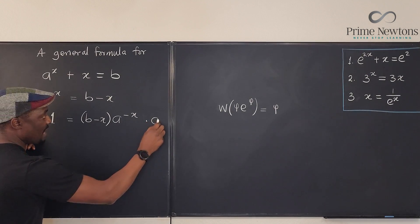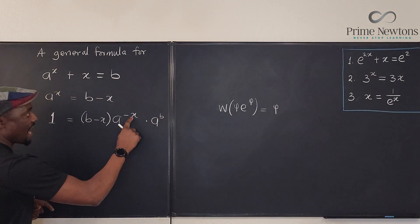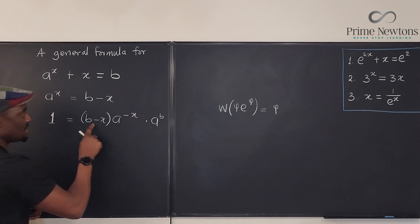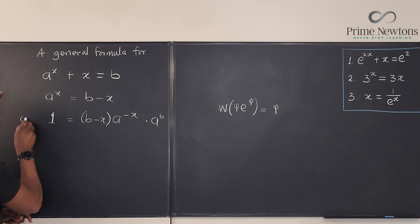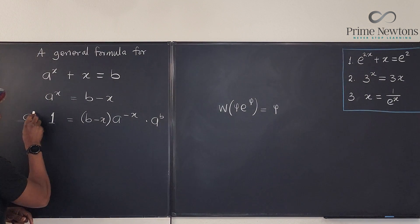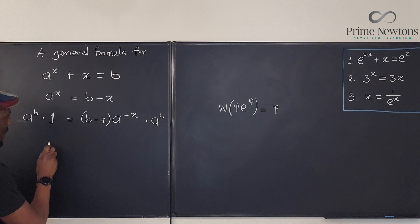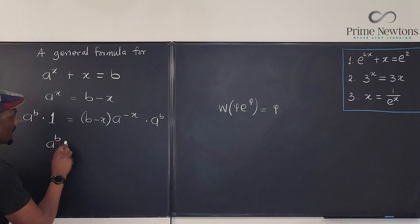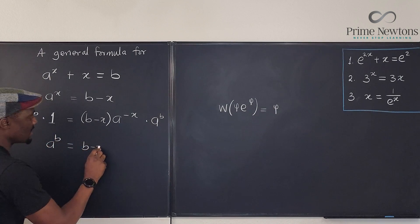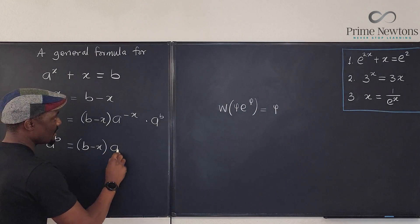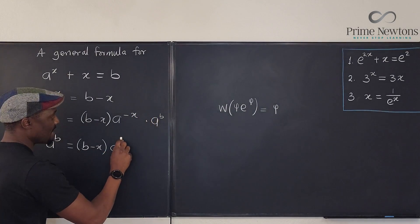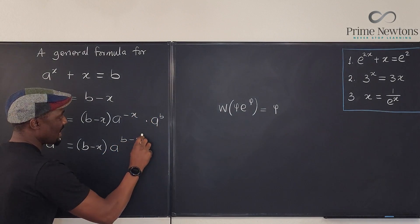If I multiply this by a to the b, then what I have here becomes minus x plus b, which is exactly what's here. And I have to multiply this also by a to the b. So now I have a to the b equals b minus x times a to the, if I add the two exponents, it becomes b minus x. Nice.